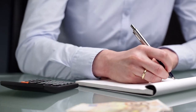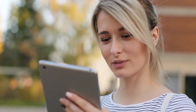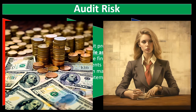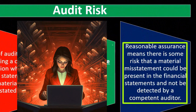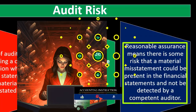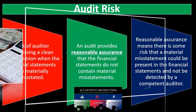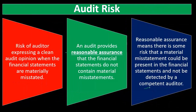An audit provides reasonable assurance that the financial statements do not contain material misstatements — it does not eliminate audit risk entirely. 'Reasonable assurance' means there is still some risk that a material misstatement could be present and not be detected even by a competent auditor. We try to keep that risk down to a reasonable level, but there will always be some audit risk remaining.